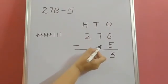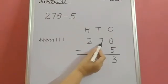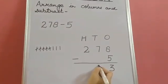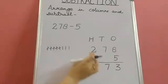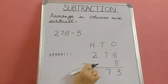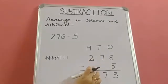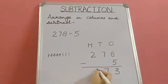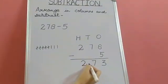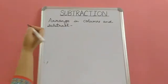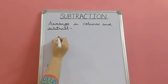Now there is no tens to be subtracted, so 7 will be carried down. 7 minus 0 is 7. No hundreds to be subtracted, so 2 minus 0 is 2.